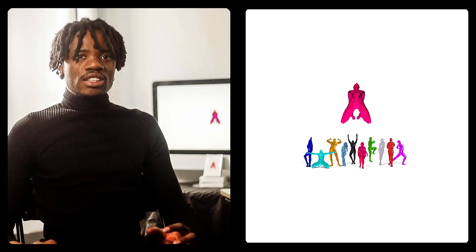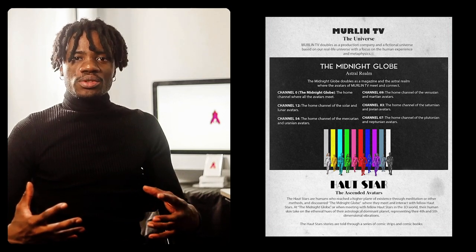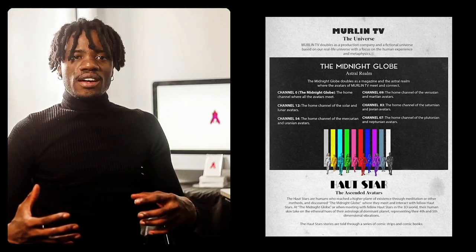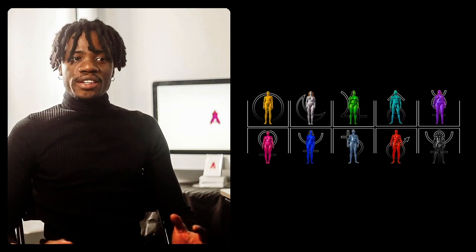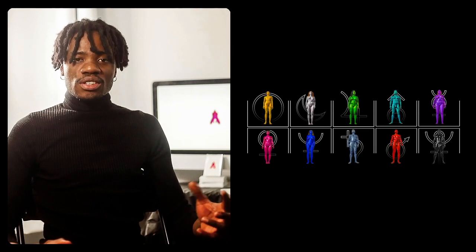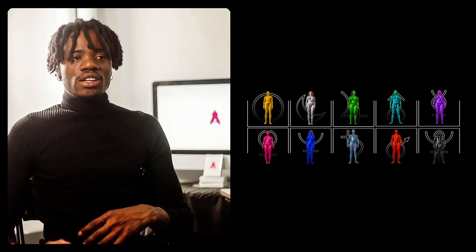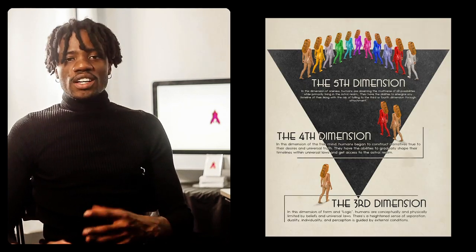It came upon me that I could create something science fiction fantasy with it. My science fiction idea was to use the avatars — the colors of the avatars — as races. The best way for me to do that was to use planets to represent the colors of the avatars. For example, the blue avatars represent Neptune, the yellow avatars represent the sun, the silver avatars represent the moon, the green avatars represent Jupiter, and so on.